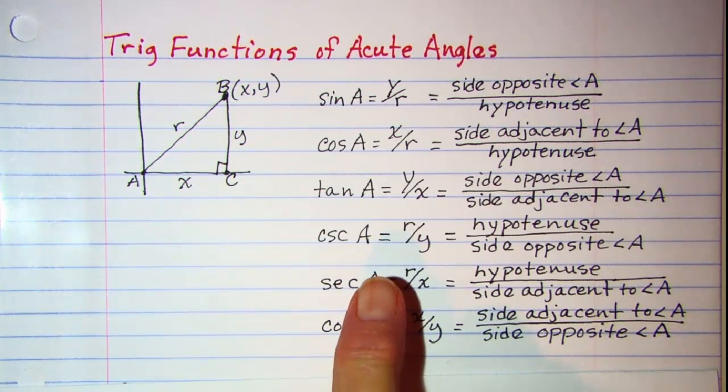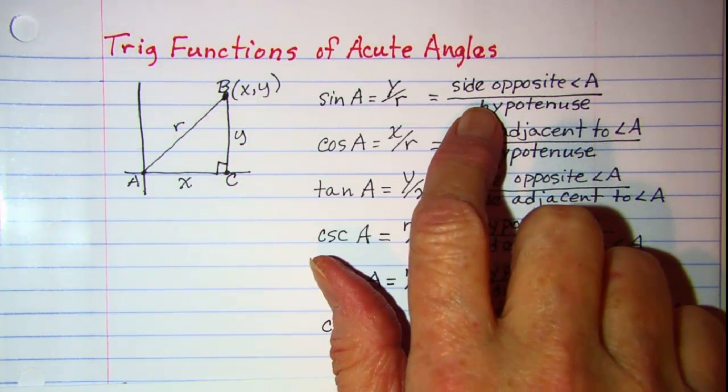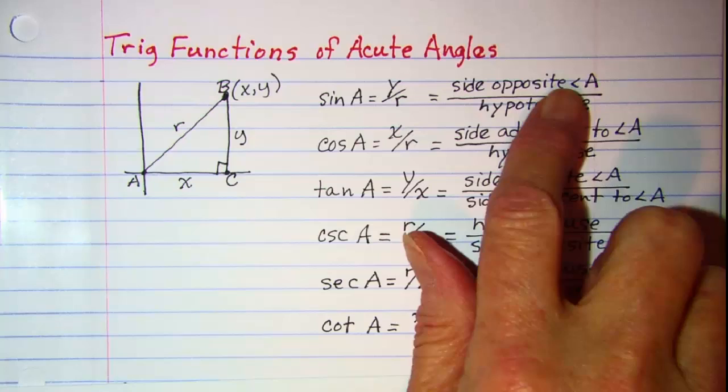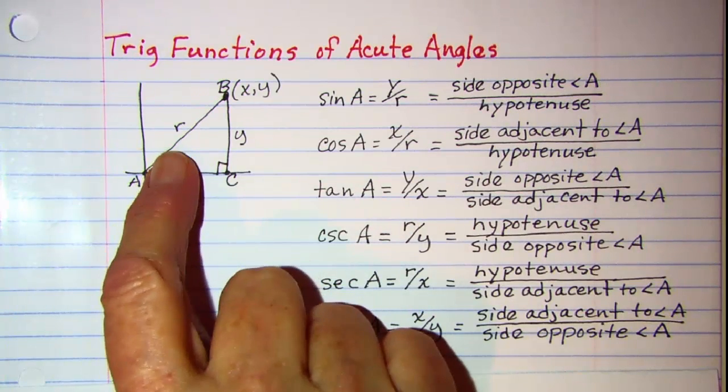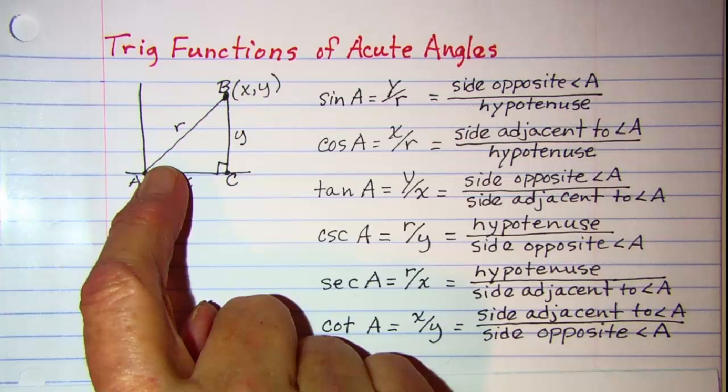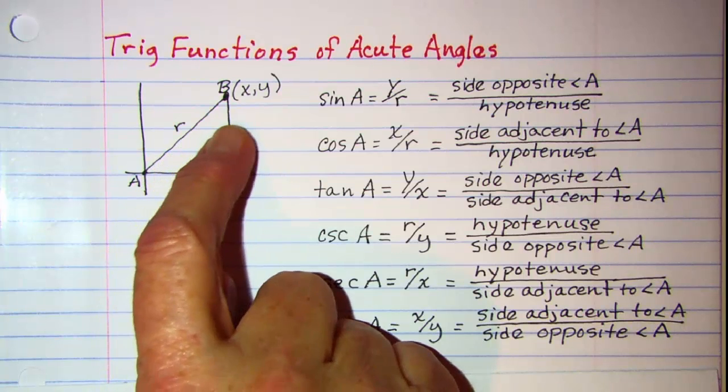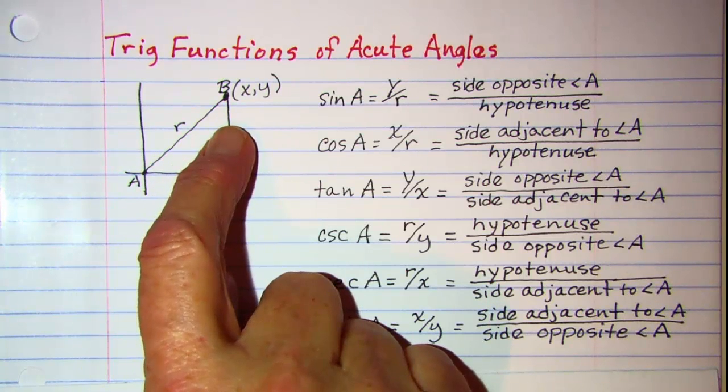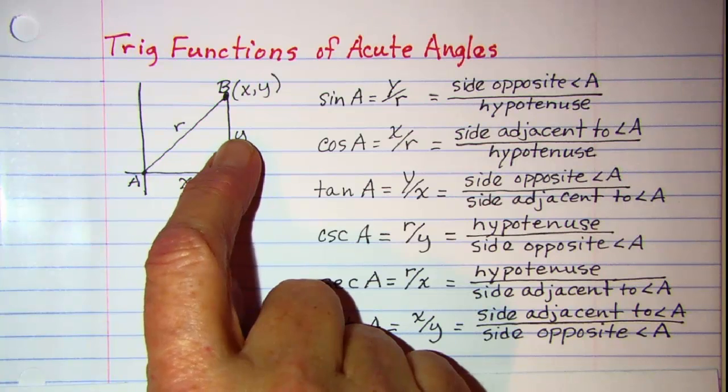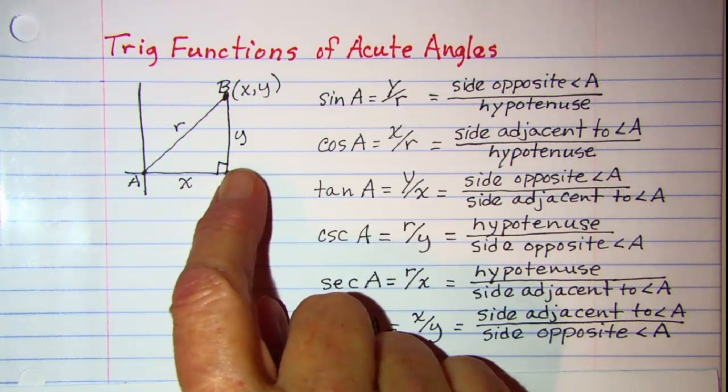But sometimes it is beneficial to think of it just as a stand-alone triangle, and you don't deal with the coordinates of the point. You think of the side opposite angle A. So if you are standing in, let's pretend this is a triangular room, and you are standing in this corner that is labeled A, then the side opposite angle A would be the wall that you look at across the room. So opposite would be this side Y right here. And the hypotenuse is always the side that is opposite the right angle.